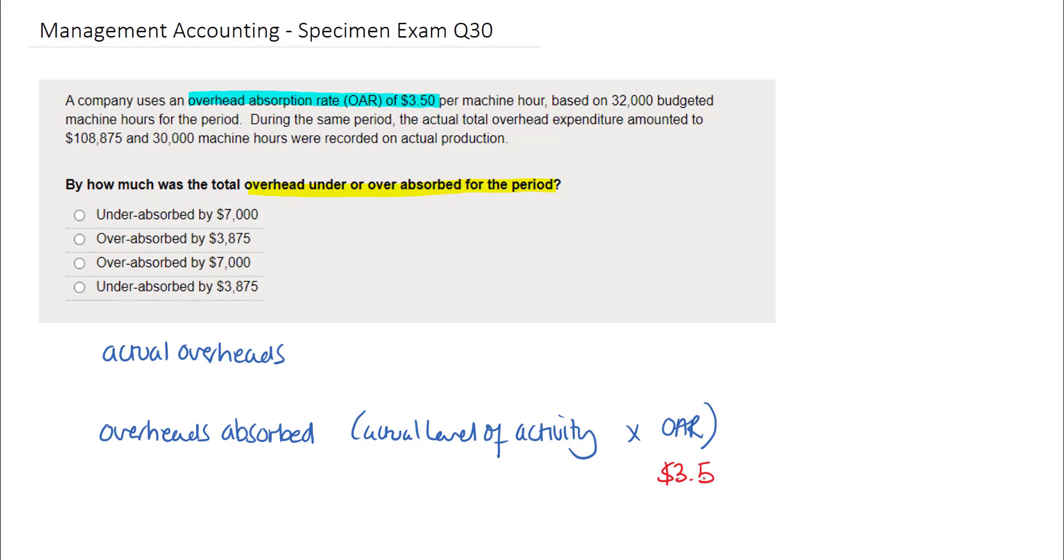This is based on 32,000 budgeted machine hours for the period. We're also told that the actual total overhead expenditure amounted to £108,875. Again, we can take this as the actual overheads in our equation.